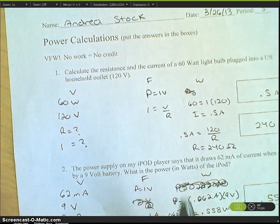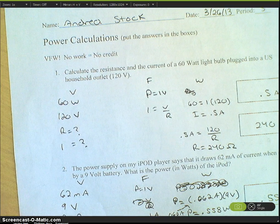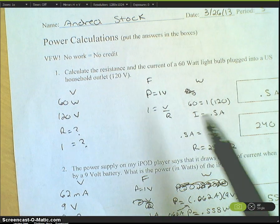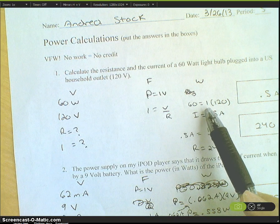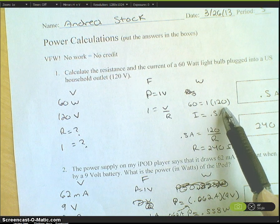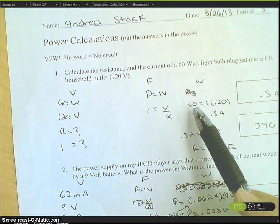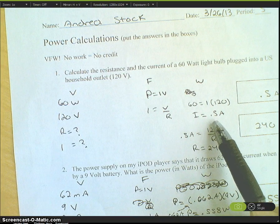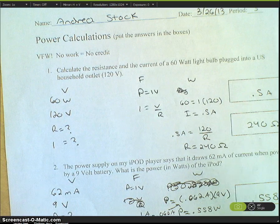Plugging all the work in, 60 watts equals the current times 120 volts. So if you divide 60 by 120, you would get 0.5 amps, which is the answer for the current.